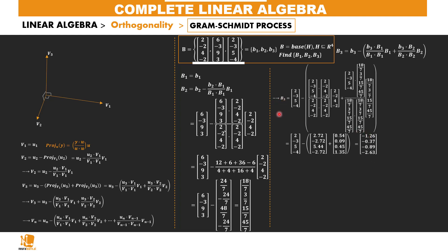With this, we have an orthogonal base made of B1, B2, and B3, where these three vectors are all orthogonal to each other.